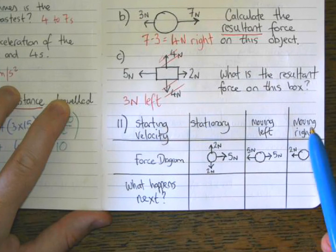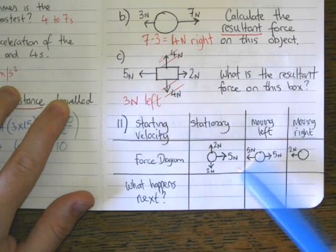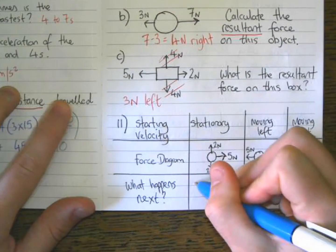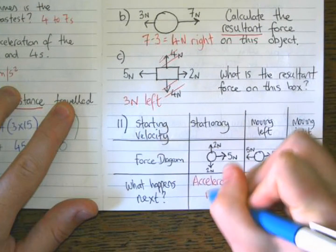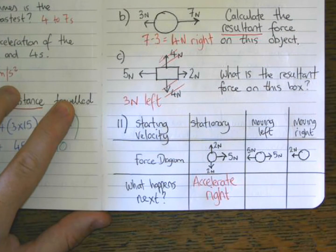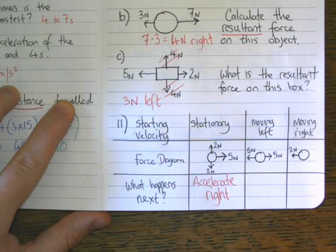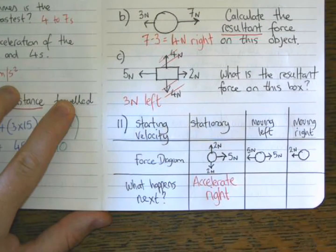If an object has a resultant force, then it will change speed. If it's stationary and the resultant force is acting to the right, then the object will accelerate to the right. If the forces are balanced, the object will stay at the same speed — if it's stationary it stays stationary, and if it's moving it keeps moving in that direction. If there's a resultant force acting in the opposite direction to the object's motion, it will cause a deceleration — the object will slow down.